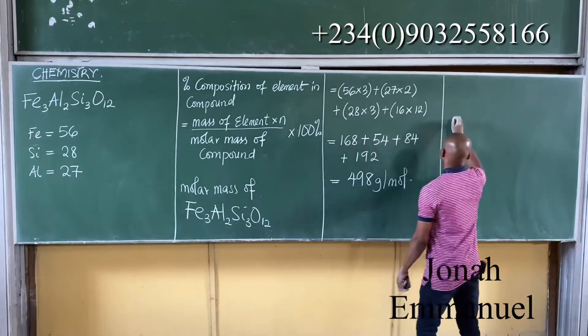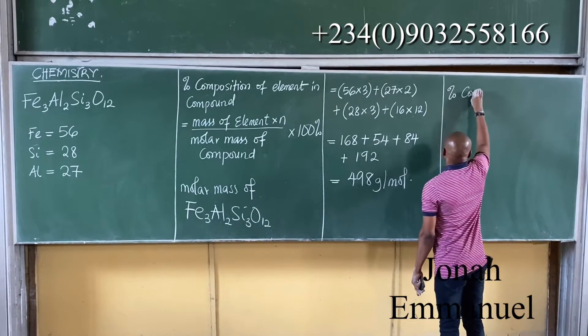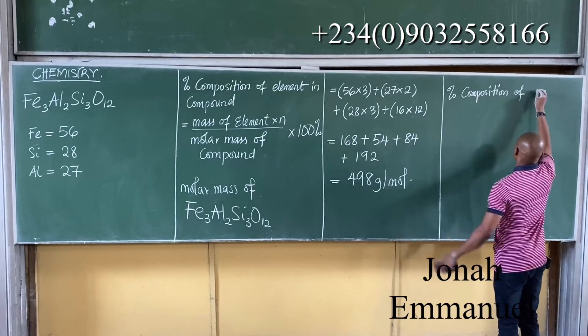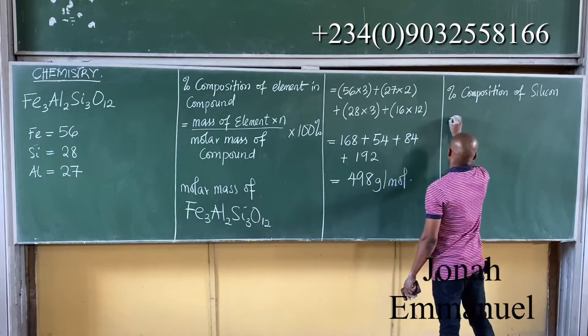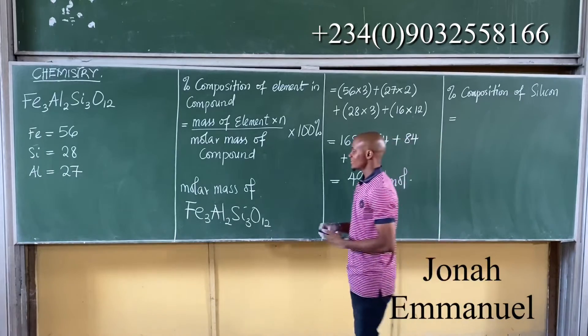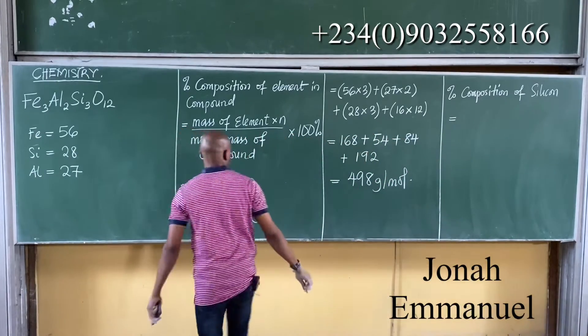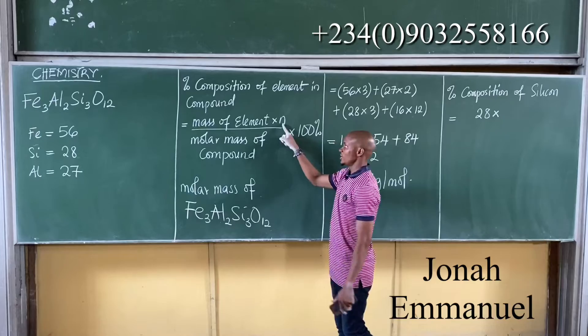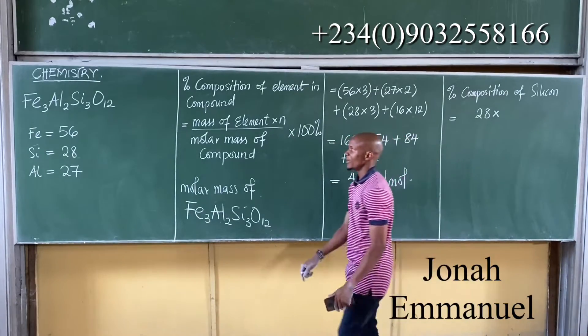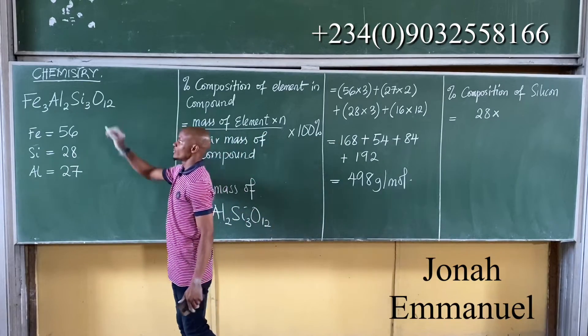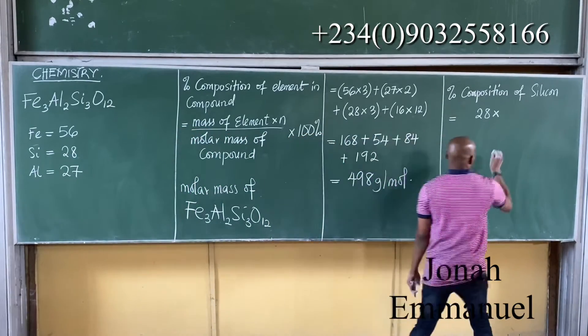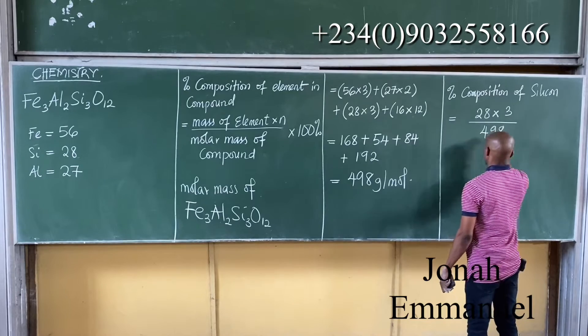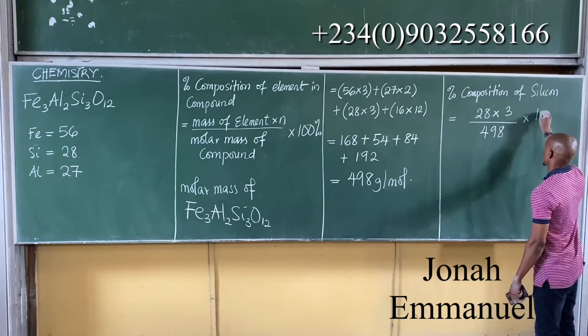So from here, that means the percentage composition of the element, in this case silicon, will be equal to the mass of the element - mass of silicon is 28 times N. N is the number of atoms in the formula of the compound. For silicon I have 3 atoms, so N becomes 3, so times 3, all over molar mass of the compound is 498 grams per mole times 100%.